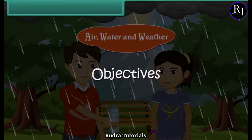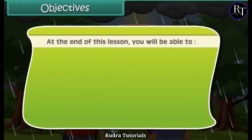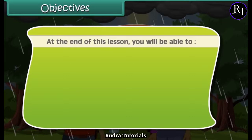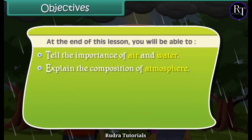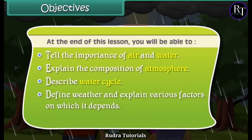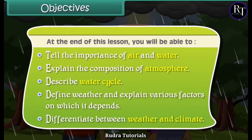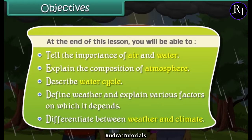Objectives. At the end of this lesson you will be able to: tell the importance of air and water, explain the composition of atmosphere, describe the water cycle, define weather and explain various factors on which it depends, and differentiate between weather and climate.